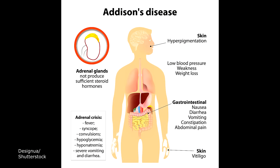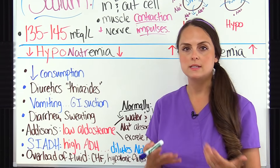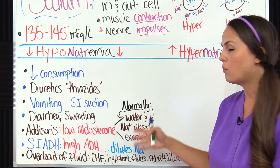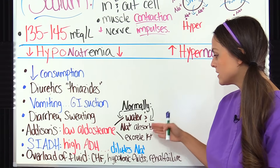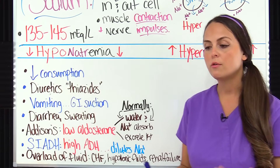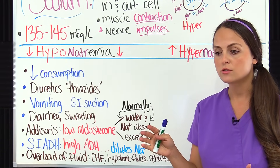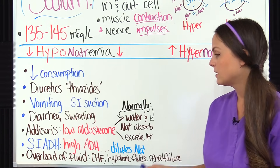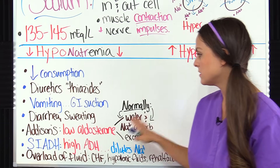Let's do a quick review about Addison's disease. This is where a patient has low aldosterone. Aldosterone plays a role with blood pressure by causing the kidneys to keep water and sodium — which increases blood pressure — while excreting potassium. If we have a low level of aldosterone, you're going to lose sodium and water. But on the flip side, you're going to keep your potassium.